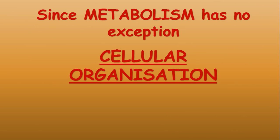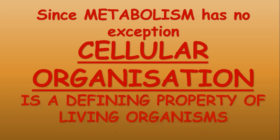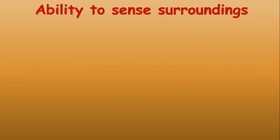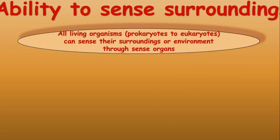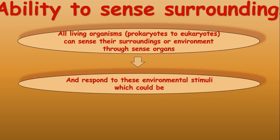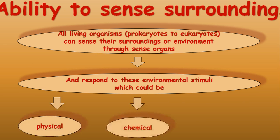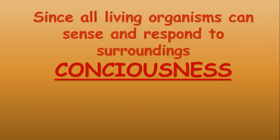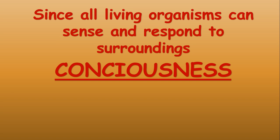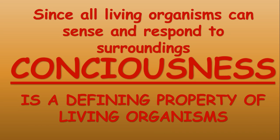Since metabolism has no exception, cellular organization is a defining property of living organisms — only living organisms are capable of showing metabolism. The fourth characteristic is the ability to sense surroundings. All living organisms from prokaryotes to eukaryotes can sense their environment through sense organs and respond to environmental stimuli, which could be physical, chemical, or biological. Since all living organisms can sense and respond to surroundings, consciousness is also a defining property of living organisms.